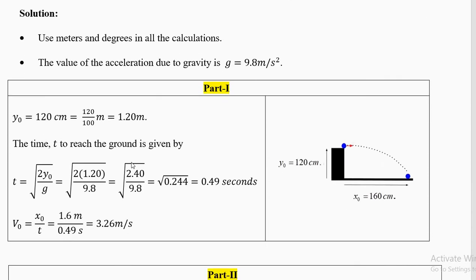There is no acceleration in the horizontal direction. The gravity acceleration is only in the vertical direction. Its magnitude is 9.8 meters per second squared — do not use any other number or unit. All these calculations have to be done in meters and seconds. The time to land on the ground depends on the height, not on the x direction, because the acceleration is in the y direction. The time is the square root of 2y0 divided by g.